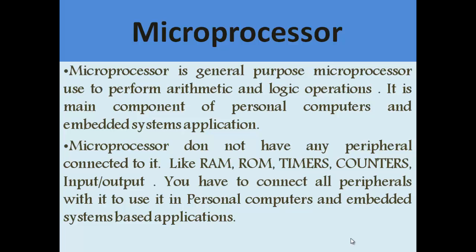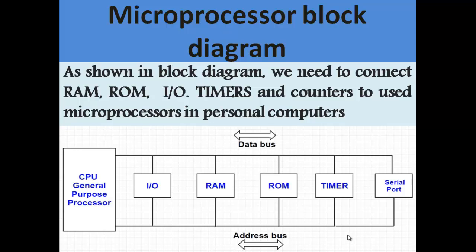To use a microprocessor in your personal computer or in any embedded system application, you have to connect externally: RAM, ROM, timers, and counters according to your requirement. As shown in these slides, this is a CPU or general-purpose processor — it does not have any internal RAM, ROM, timers, serial port, or input/output. All these peripherals are connected to it externally through the data bus and address bus.